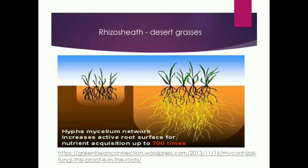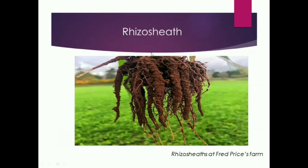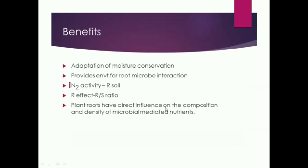A thick soil cylinder that binds to the plant roots is called as rhizosheath — for example, desert grasses. Sand grains cemented together with an extracellular mucigen which is excreted by the root cells are known as rhizosheath. Its benefits include adaptation for moisture conservation and it also helps in extensive root-microbe interaction.